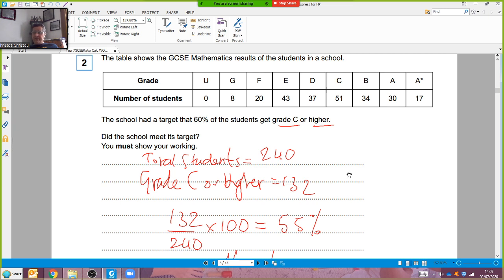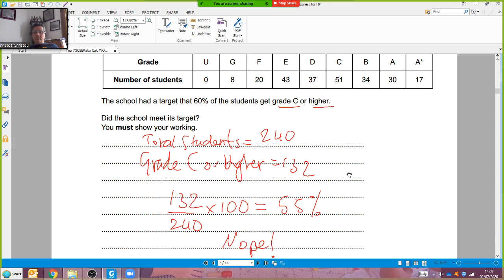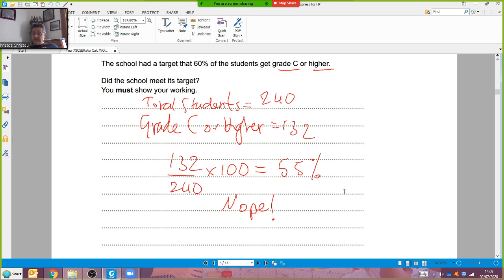Now I'm going to work out the percentage of those who got C or higher: 132 over 240 times 100. That's a method mark. 55%, that's my answer mark. And you've got to answer the actual question: did the school meet its target? Nope. You get a mark for the nope because if you've got all the evidence that comes before it, then that's worth the mark. If you just write down no, you get zero for it.